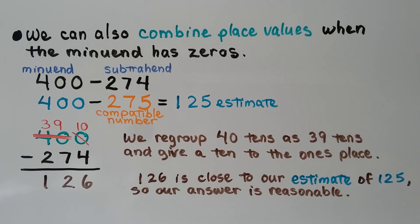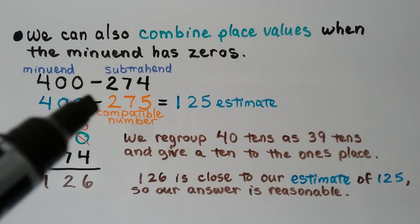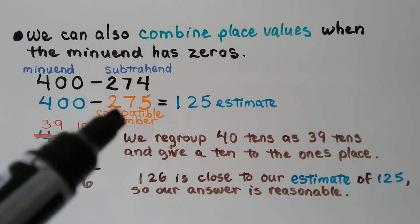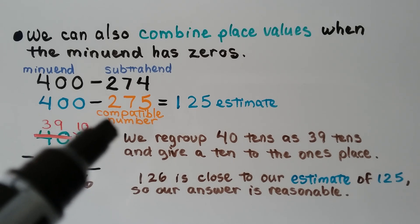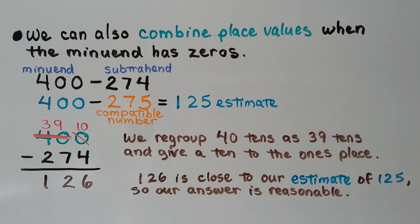We can also combine place values when the minuend has zeros. Remember, this is the minuend and that's the subtrahend. When the minuend has zeros, we can combine place values. Let's estimate first. This is already at 400. We can use a compatible number for 274 is 275. 400 minus 275 is 125 for our estimate.